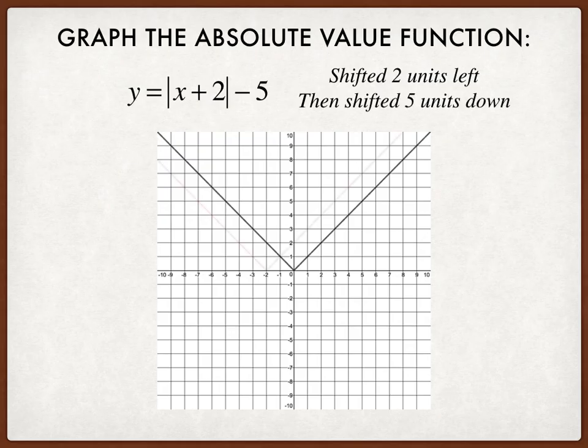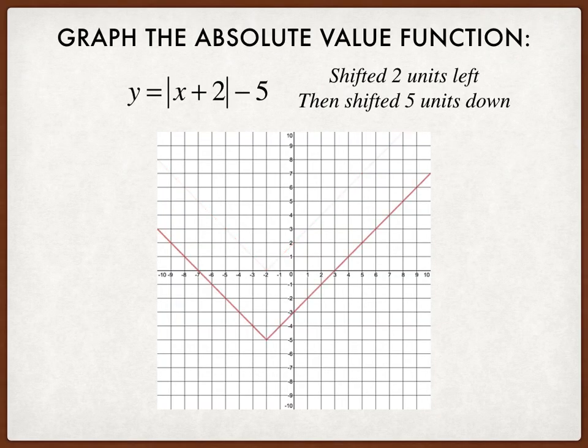So let's start with our horizontal shift. It would go like this. And then the vertical shift 5 units down from there. Notice the vertex of this curve would be at the point negative 2, negative 5.